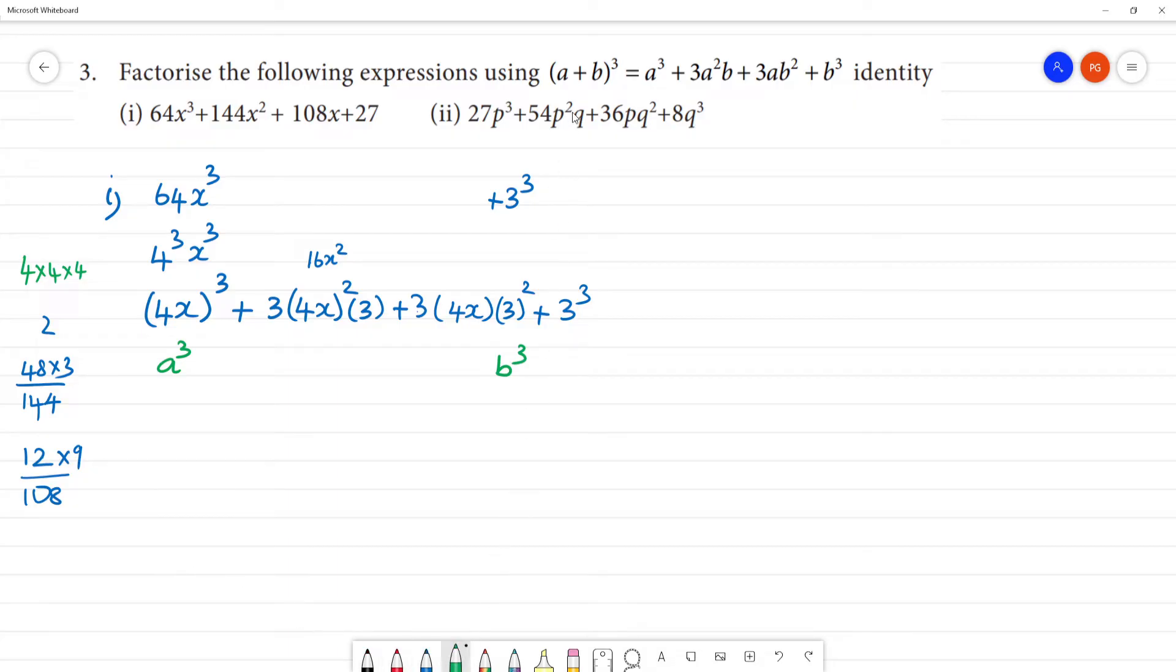So this resembles (a+b)³. Here a is equal to 4x, and b equals 3.